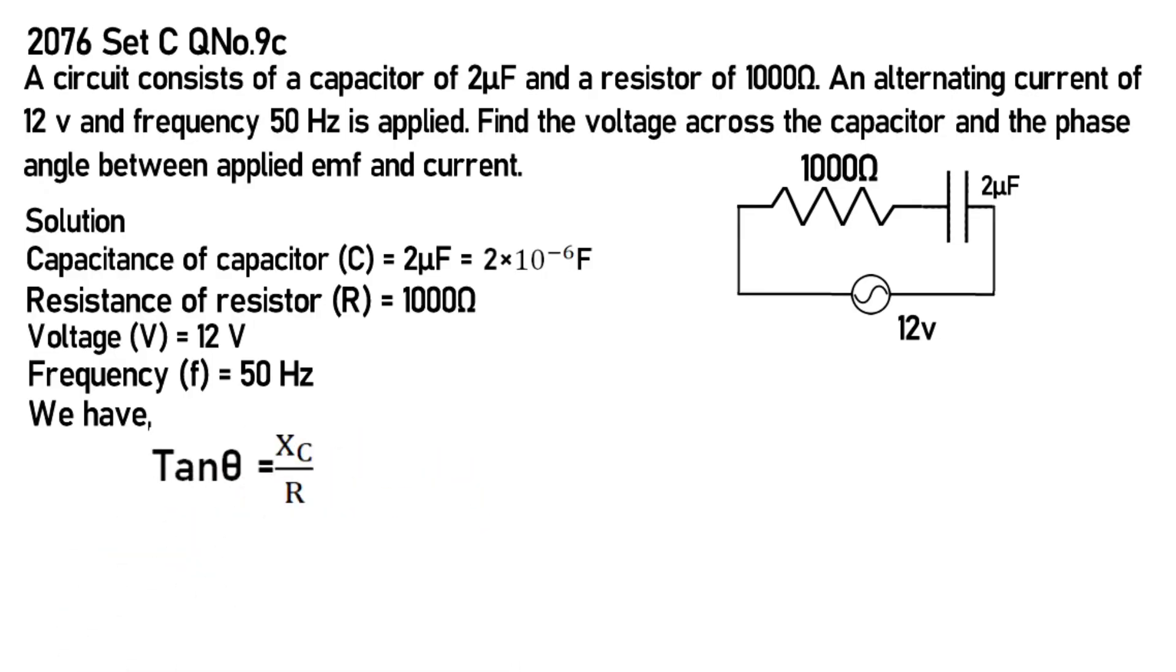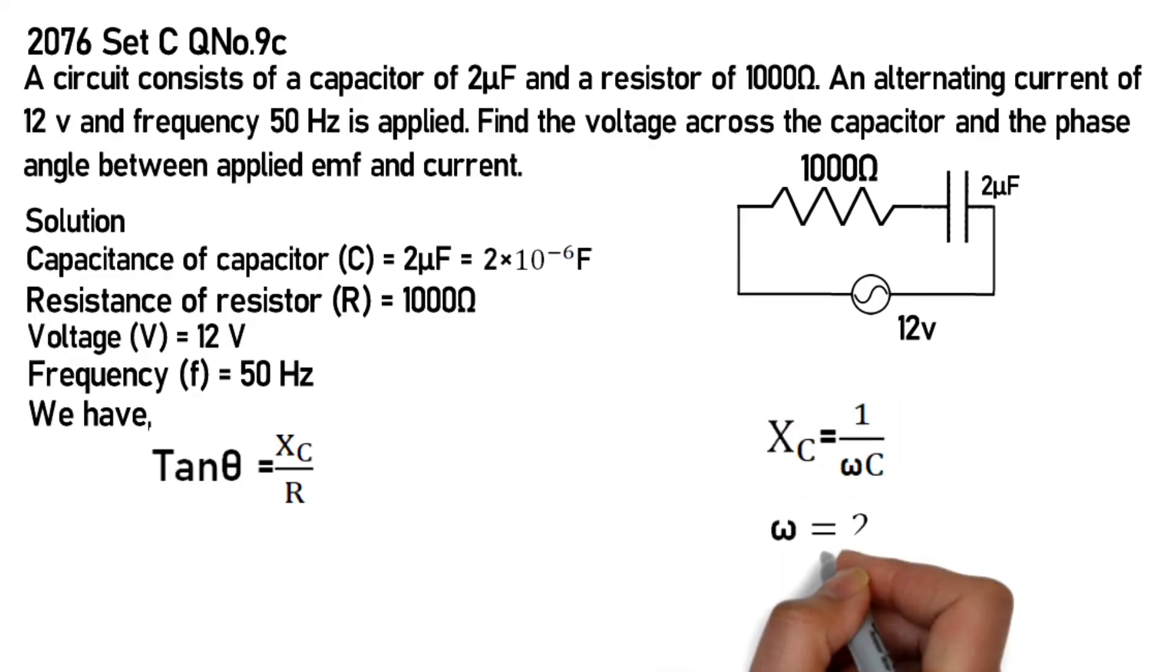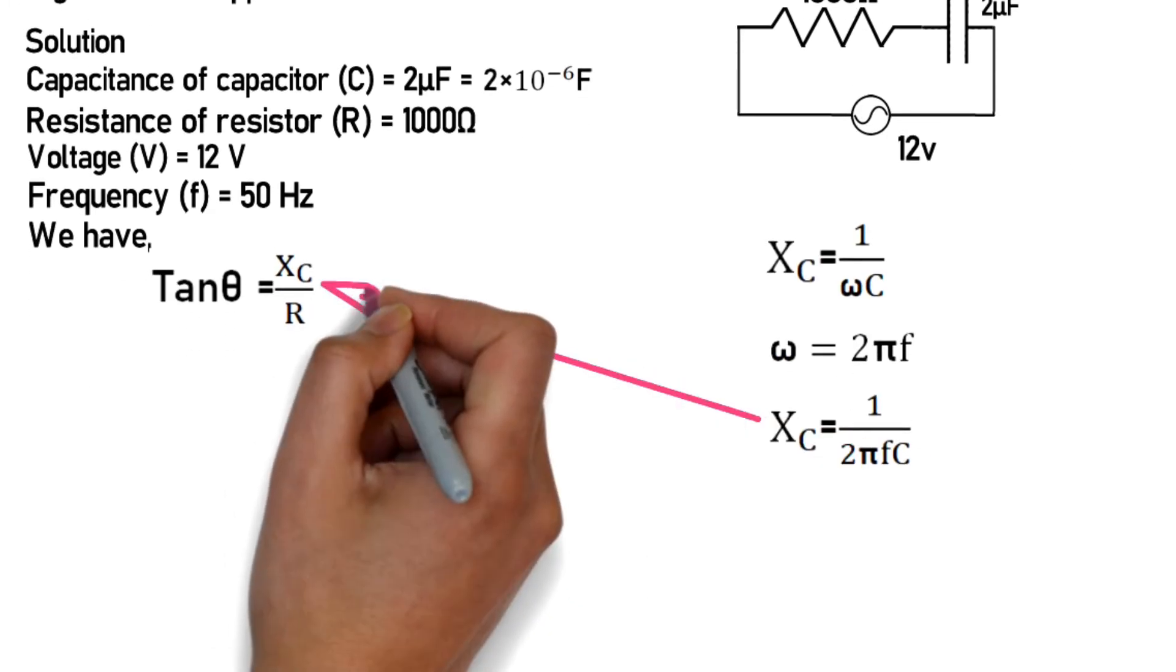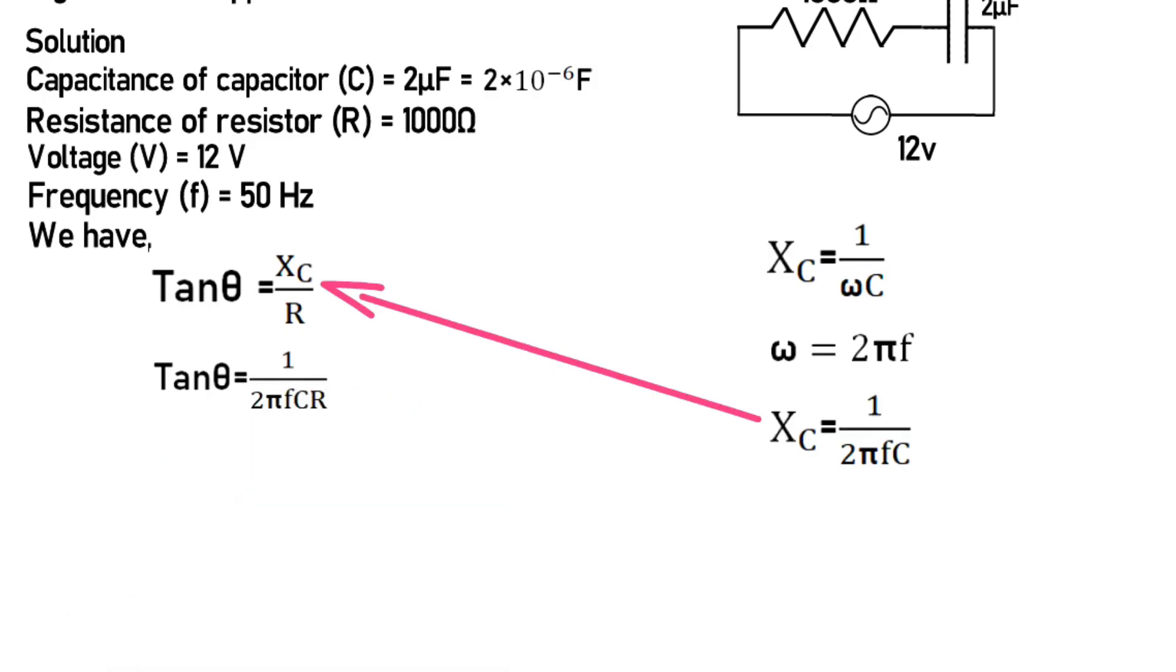For phase angle, tan θ = Xc/R = 1/(2πfCR). Substituting the values where f is 50 Hz, C is 2 microfarad, and R is 1000 ohm, and calculating using the equation, the theta value comes out to 57.9 degrees.